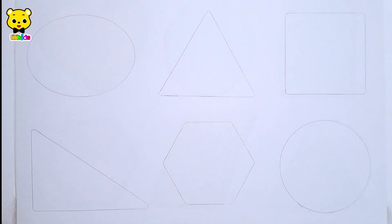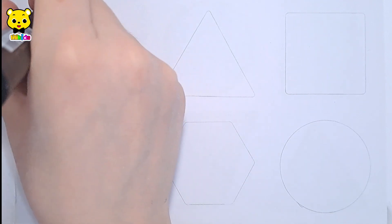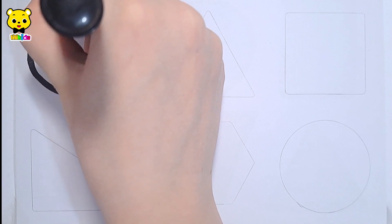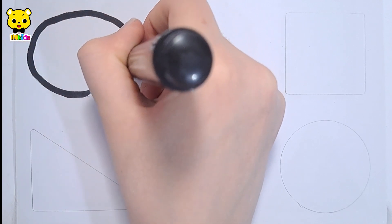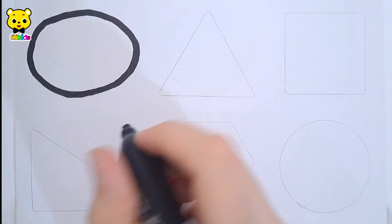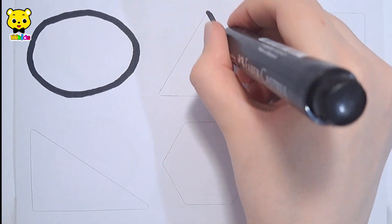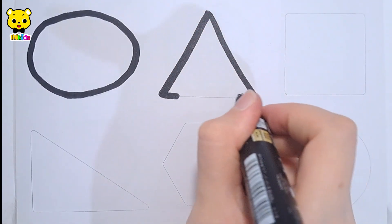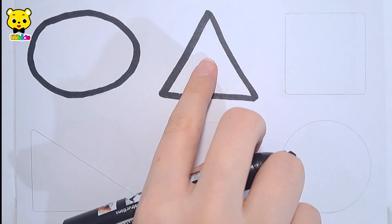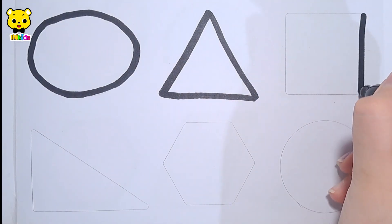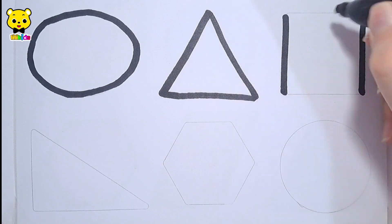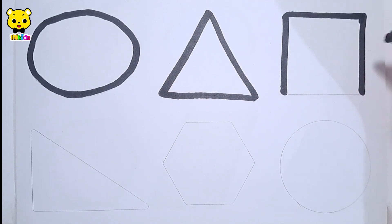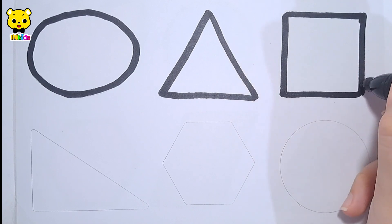Let's learn to draw some 2D shapes. Oval, triangle, square.